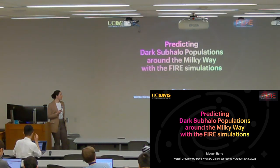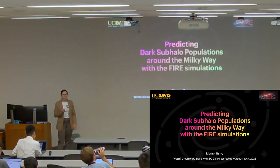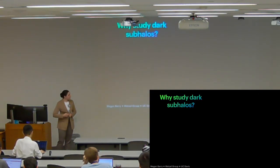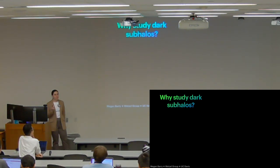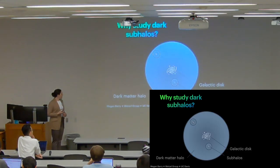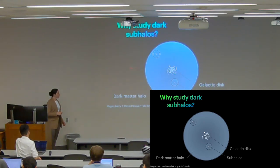So first to motivate this topic a little bit and especially define what exactly I mean by dark subhalos. I don't just mean the dark matter components of a luminous satellite galaxy. When I say dark I mean dark as in low mass, no stars.